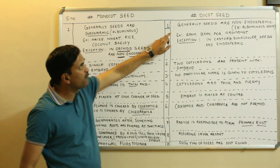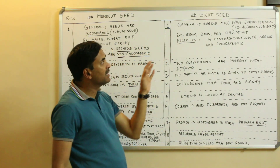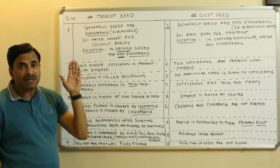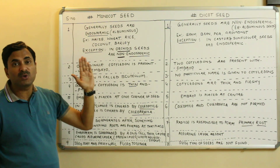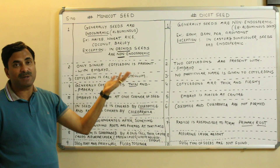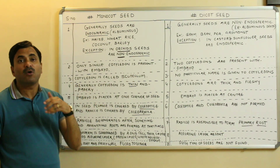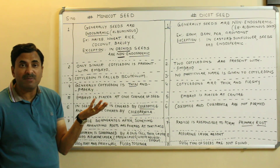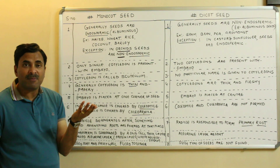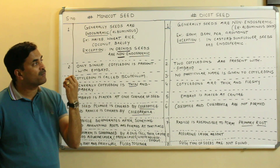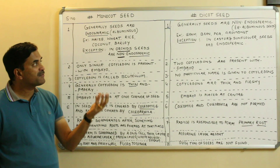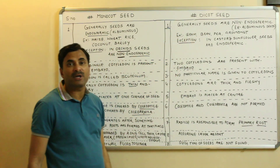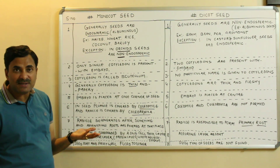For dicot seeds, the seeds are non-endospermic at maturity — they do not have endosperm. That is why they are called non-endospermic, ex-albuminous, or non-albuminous seeds. This is because during embryonic development the endosperm is fully utilized, so mature dicot seeds have no endosperm remaining.